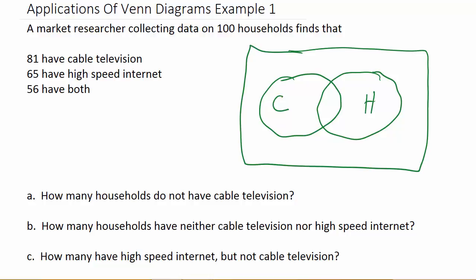It says 56 have both, so that's what they have in common — that's where they're going to overlap. So where they overlap, we put 56.